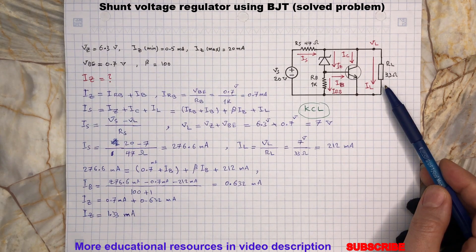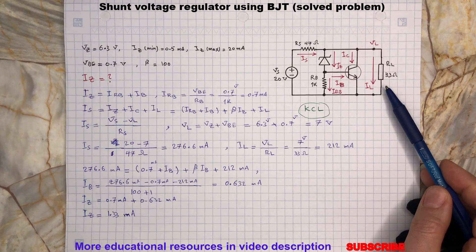If the load resistance decreases, reduced current to the base of the transistor results in less collector current, and this allows a greater current for the load which maintains the regulated voltage across the load.